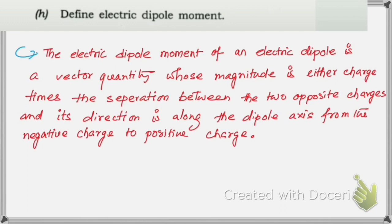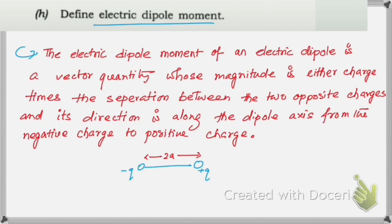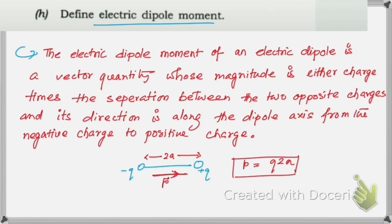Next: the definition of electric dipole moment. It is a vector quantity. For a dipole consisting of charges −q and +q separated by a distance 2a, the dipole moment p is directed from the negative to the positive charge, and its magnitude is given by q times the separation between the two charges.